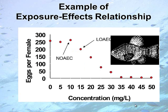Here's another way of displaying effects. In this case we have a reproductive endpoint — number of eggs per female fish on the y-axis, close to 250 up to a certain concentration point. On the x-axis is the concentration of the chemical in water, in milligrams per liter. You'll see the terms NOEC and LOEC: No Observable Adverse Effect Concentration and Lowest Observed Adverse Effect Concentration. The NOEC is the last point at which there is no effect; beyond that concentration is the LOEC — the first dose at which an adverse effect is observed.